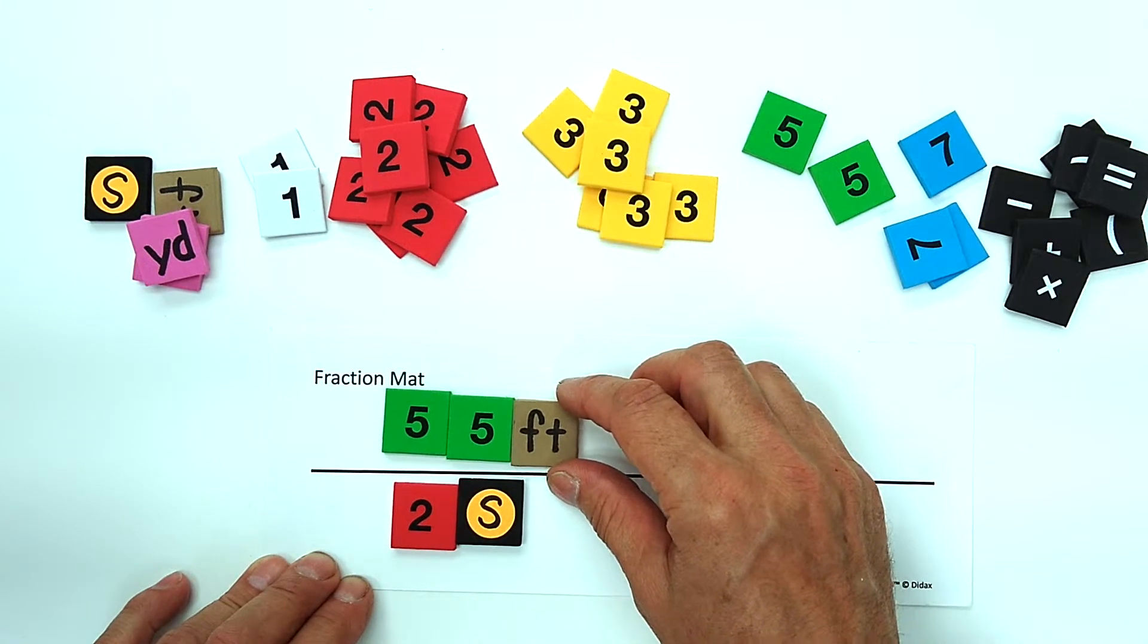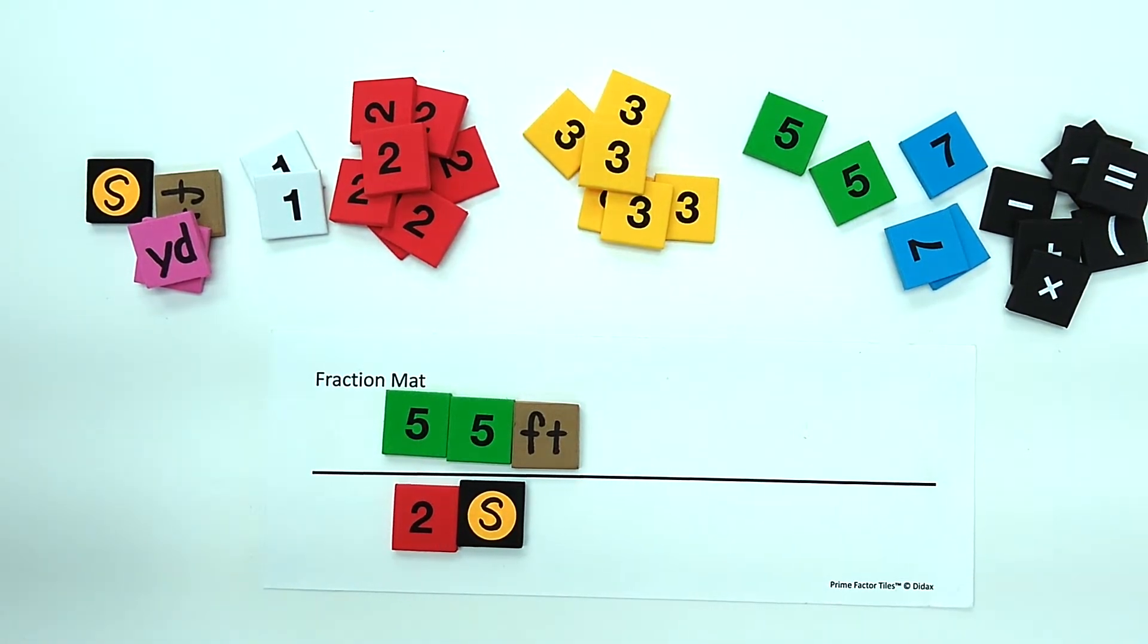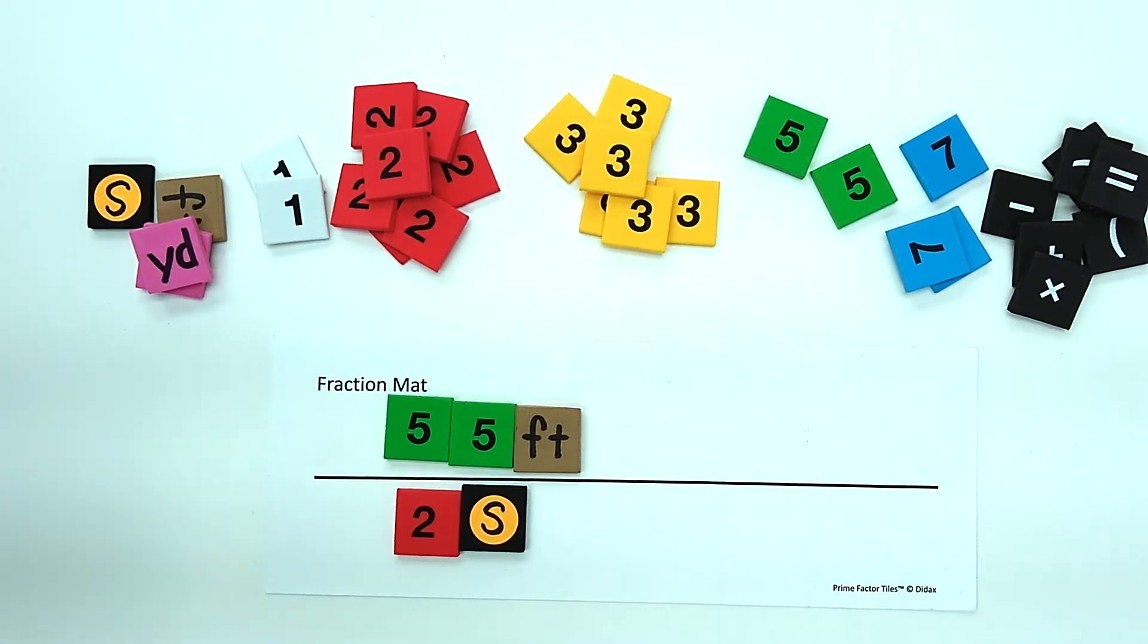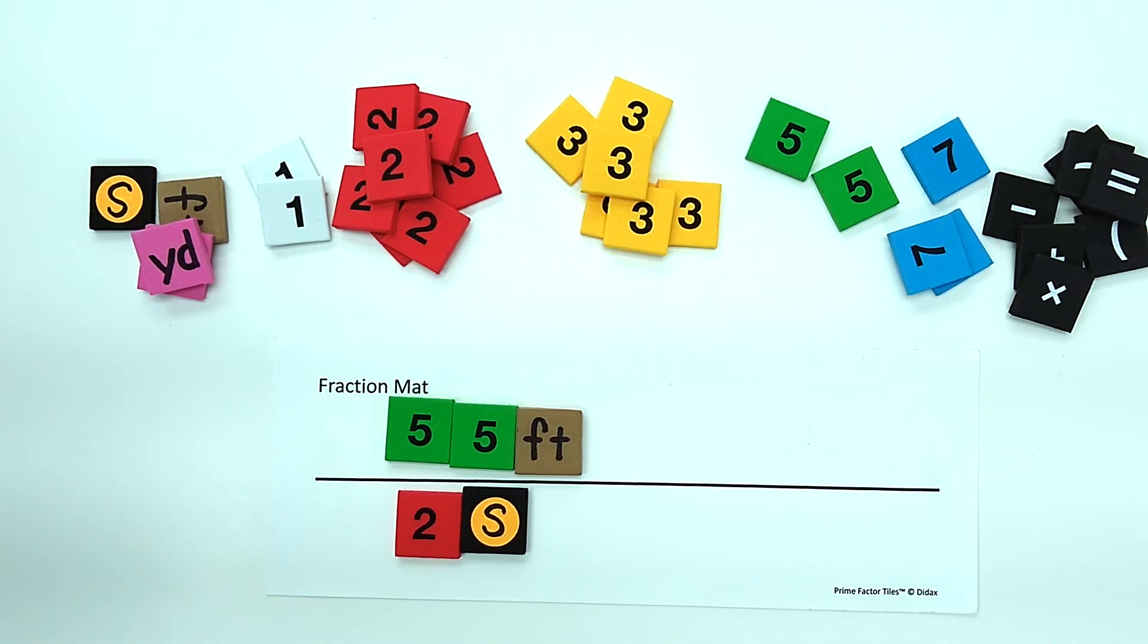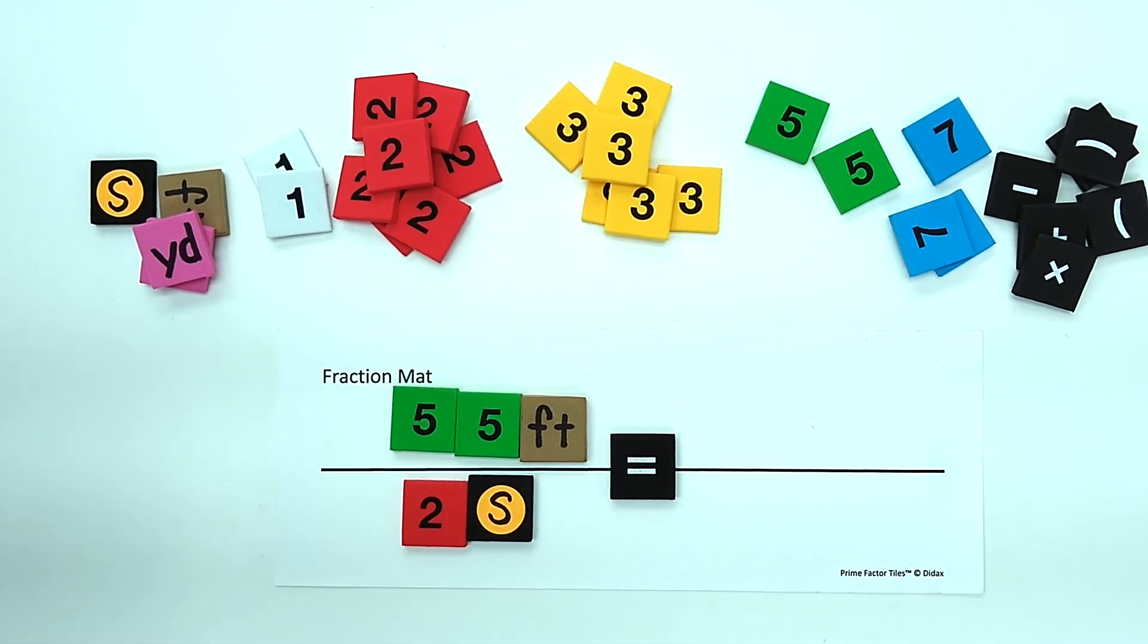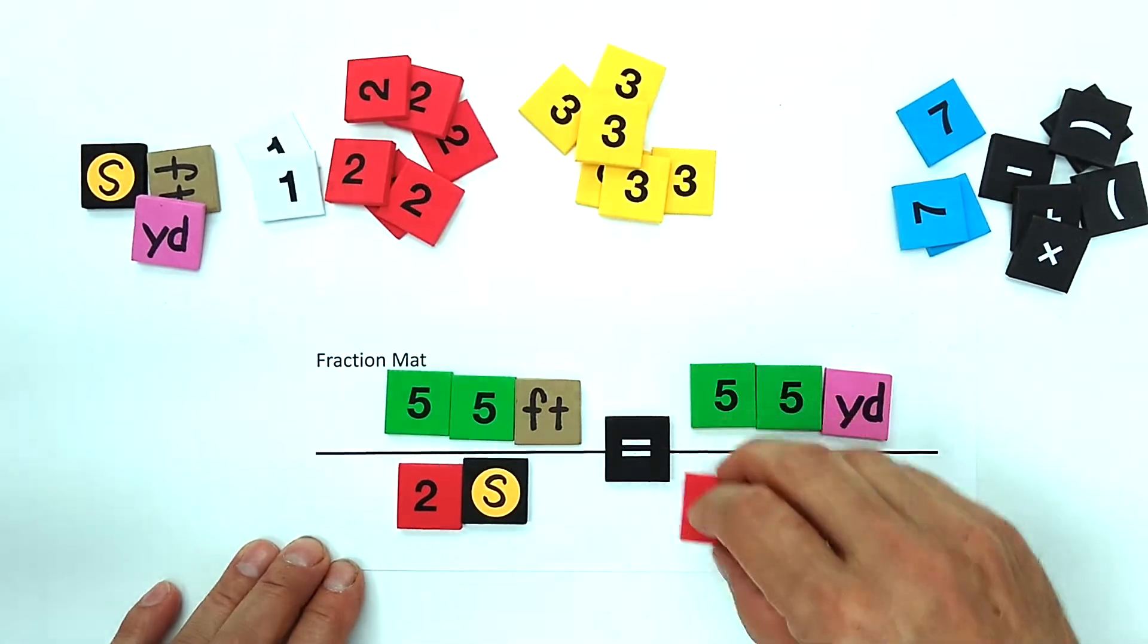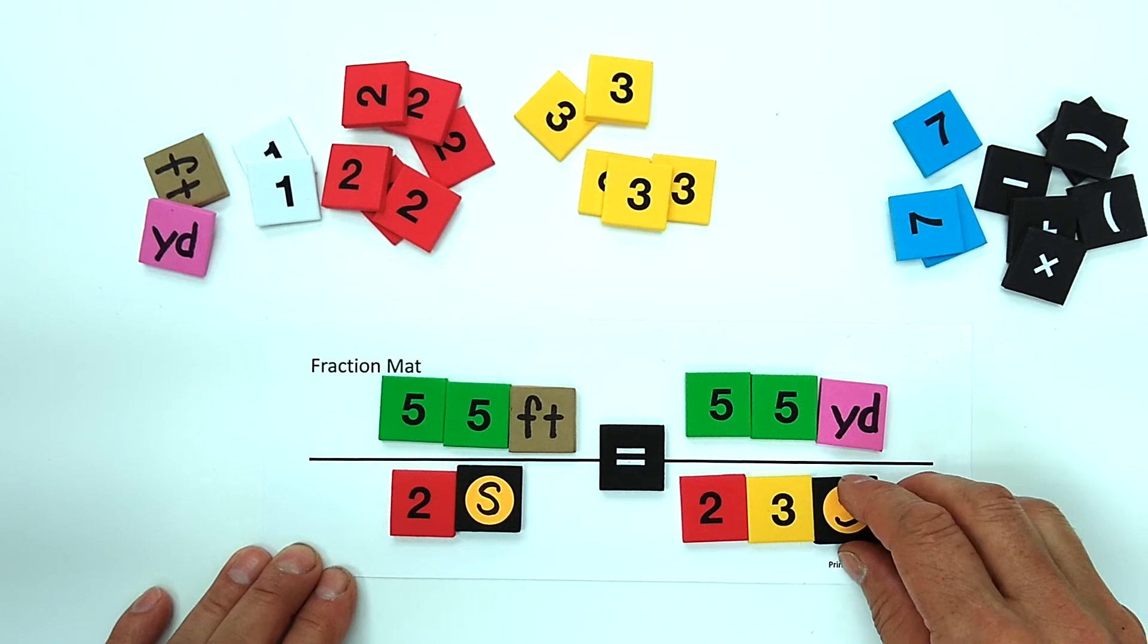That leaves us with 25 feet per 2 seconds. Now it's important to note that our rate hasn't really changed. We've got different units and we've got different numbers, but the speed of the object that was going 25 yards per 6 seconds hasn't changed. And so we can say that these rates of 25 feet per 2 seconds and 25 yards per 6 seconds are equivalent rates.